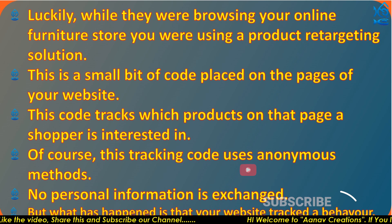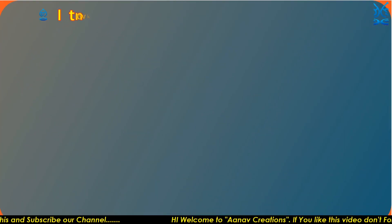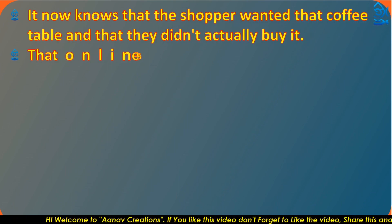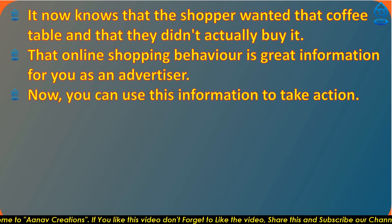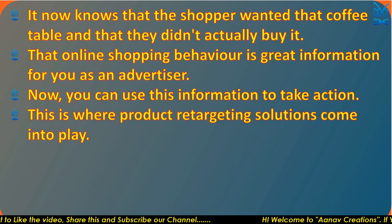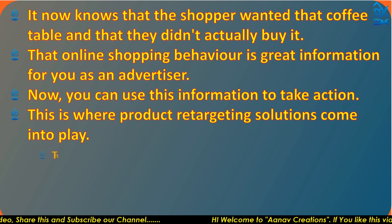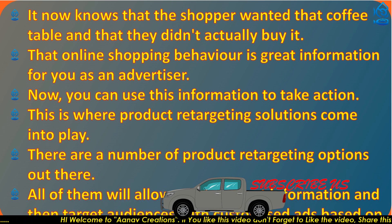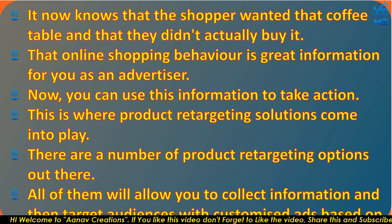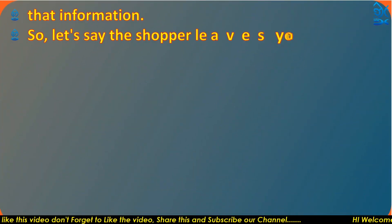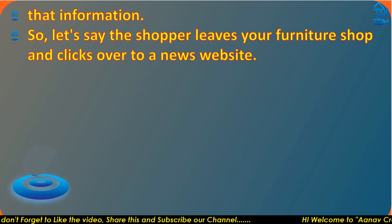What has happened is that your website tracked their behavior. It now knows that the shopper wanted that coffee table and didn't actually buy it. That online shopping behavior is great information for you as an advertiser. Now you can use this information to take action. This is where product retargeting solutions come into play. There are a number of product retargeting options out there — all of them allow you to collect information and then target audiences with customized ads based on that information.